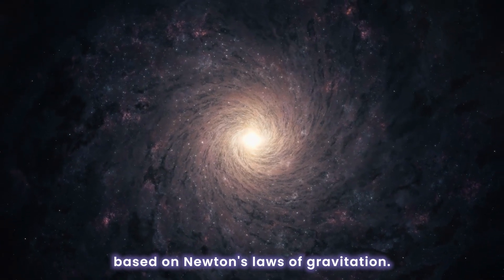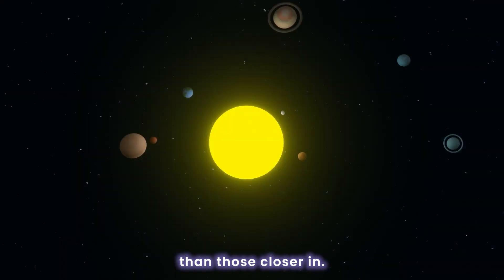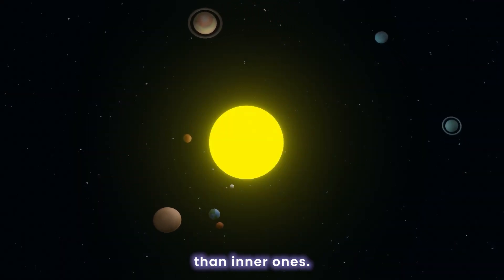Based on Newton's laws of gravitation, stars farther from a galaxy's center should orbit more slowly than those closer in, just like outer planets orbit the sun more slowly than inner ones.